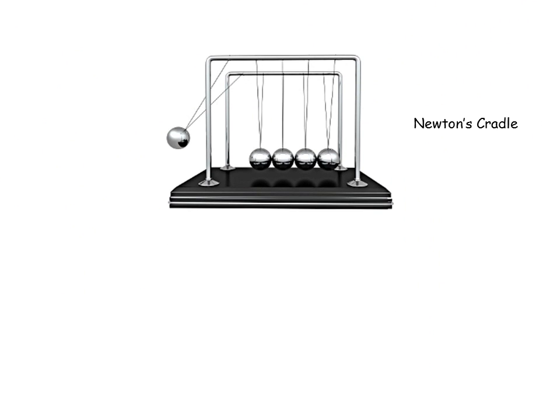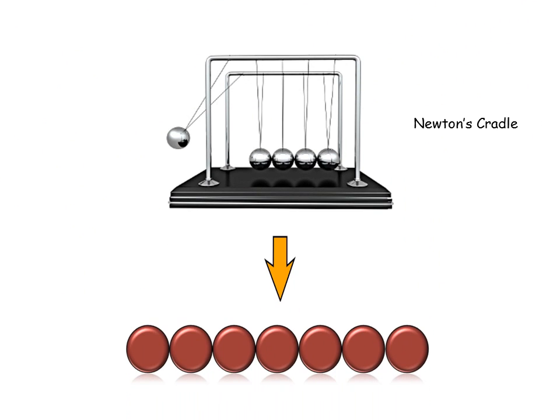The granular chain is similar to this classic toy, except instead of the balls being held by strings, they are held in a track with fixed walls. As you have likely seen, the Newton's cradle supports a traveling pulse, which can be initiated by pulling a ball back and then allowing it to strike the rest of the chain.